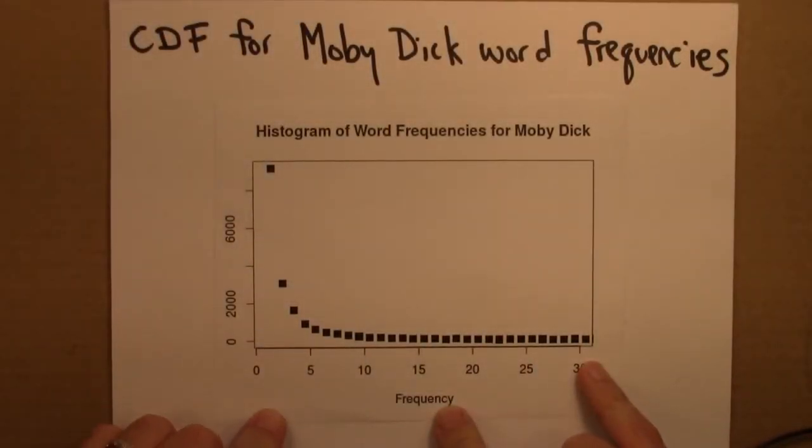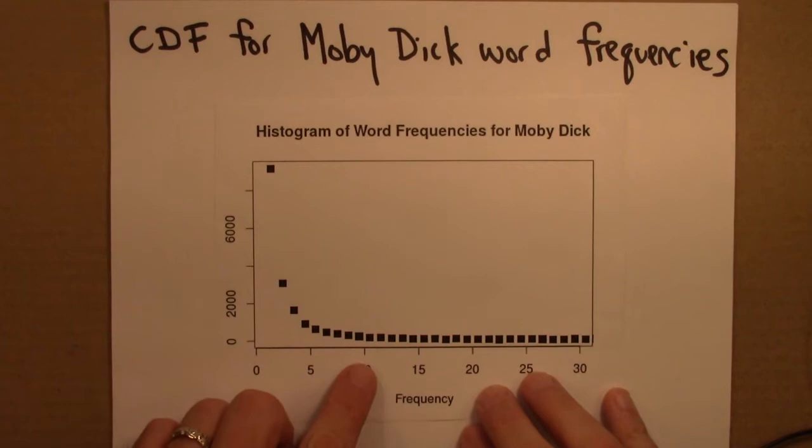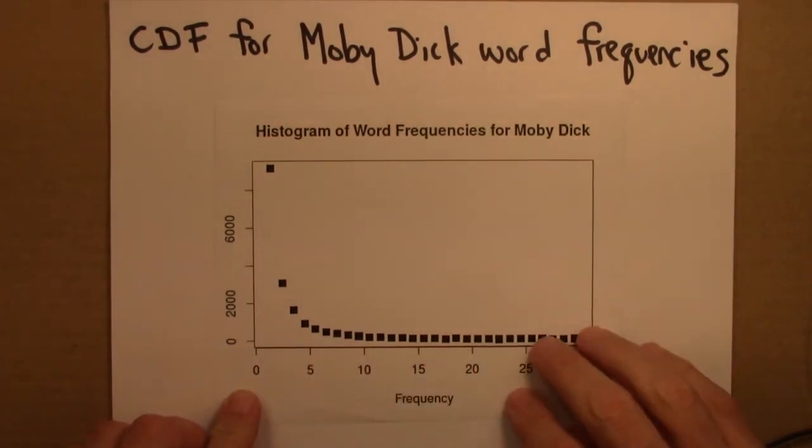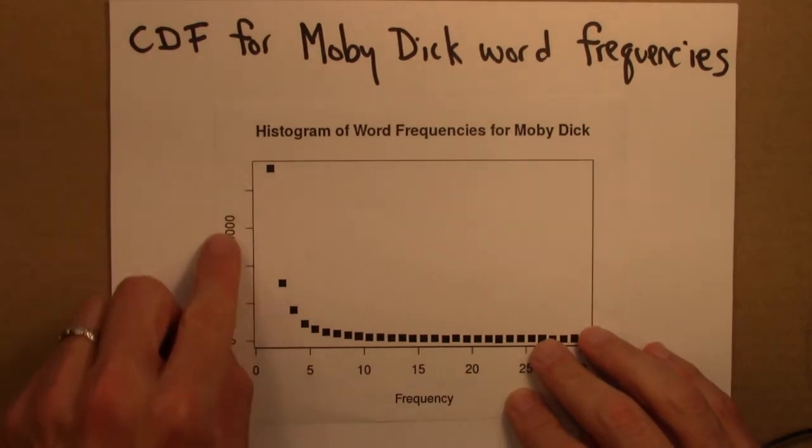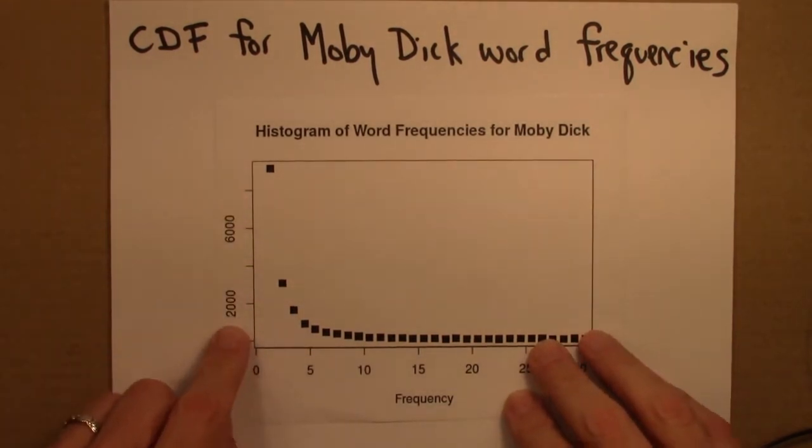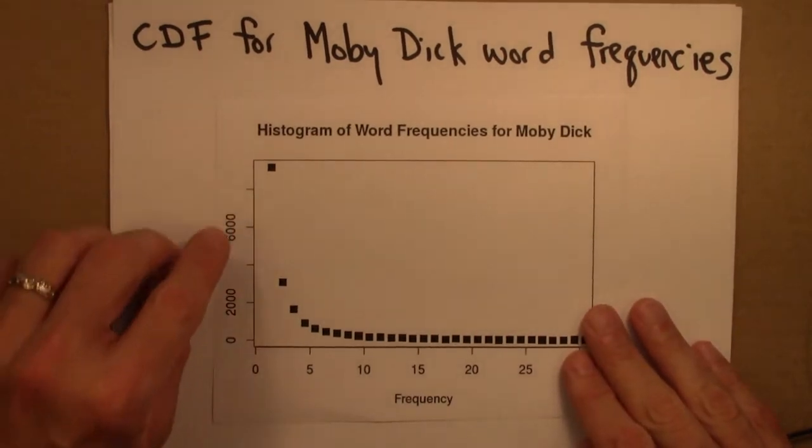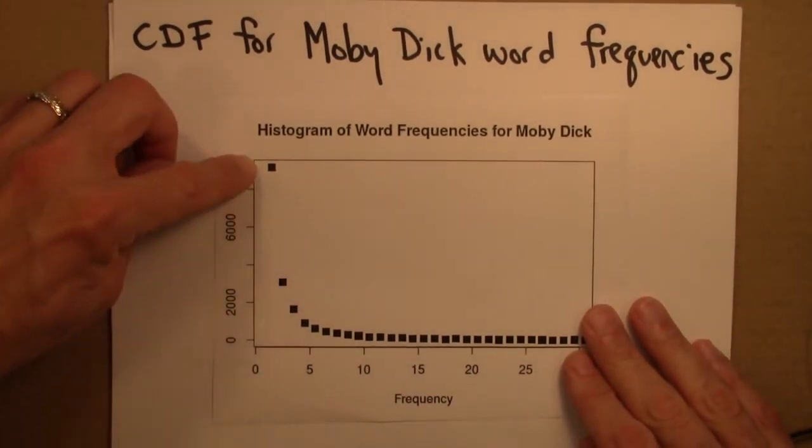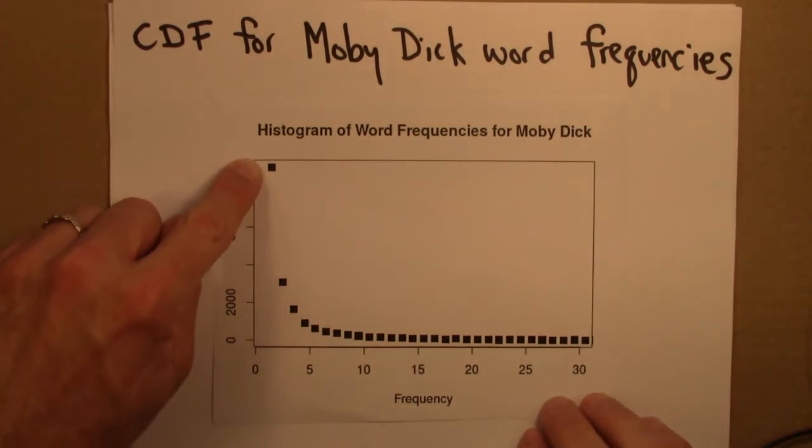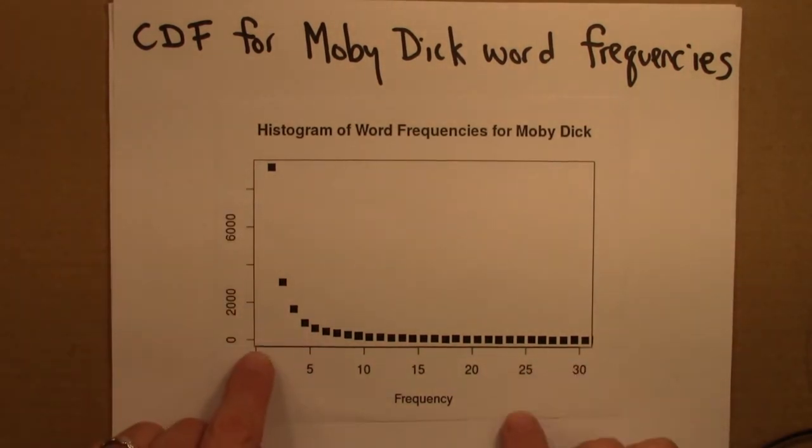So recall that previously we've looked at the word frequencies for words in Moby Dick. And as part of that, we came up with this histogram. So the frequencies are here, and then the number of counts is on the vertical axis. And so what this means is that there are around 7,500 words that appear once.